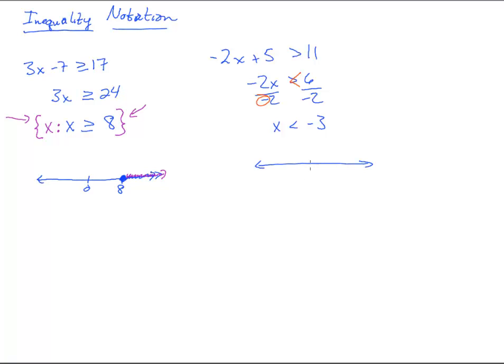So again, the graph would look like this. There's 0, there's negative 3. Just like normal, we would have an open circle saying negative 3 is not a solution. And then we'd color in everything there.